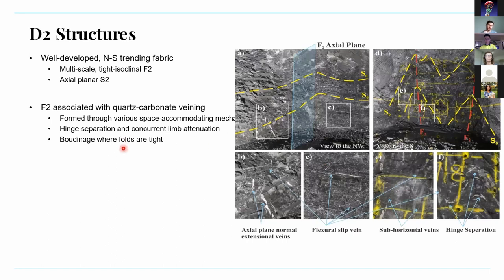Moving on to the D2 structures — this is the dominant ductile fabric in the Monizer, generally a north-south trending fabric. At Dougal River it's comprised of multi-scale tight to isoclinal F2 folds with an associated axial plane cleavage. The folds are also associated with quartz-carbonate veining that formed through various space-accommodating mechanisms such as flexural slip, axial plane normal extension, hinge separation, concurrent limb attenuation, and boudinage where the folds are tight.